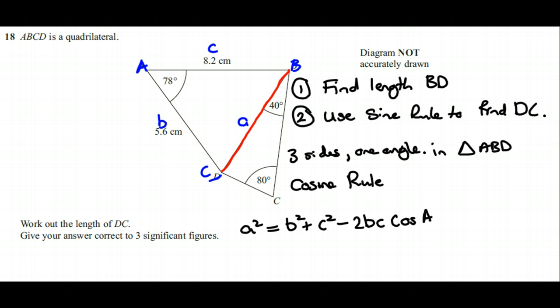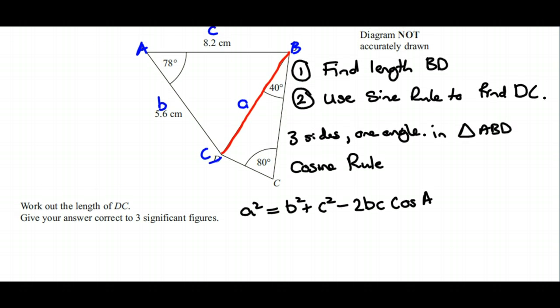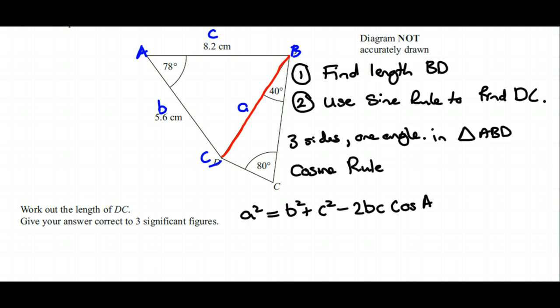What we now need to do is plug all of those numbers into the cosine rule. So a² will be b² which is 5.6, plus c² which is 8.2, minus—and I'm going to write it as you should type it into your calculator, so it is a calculator paper—and by putting everything in brackets, make sure you don't make any mistakes with the calculation.